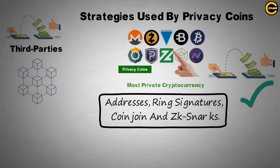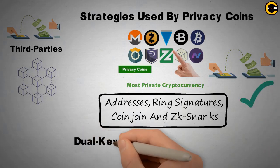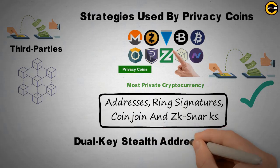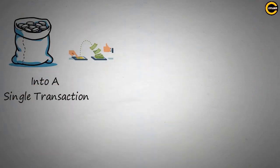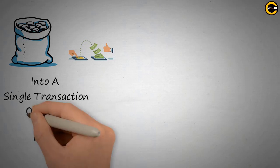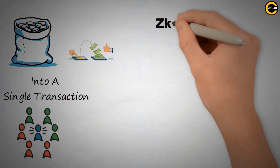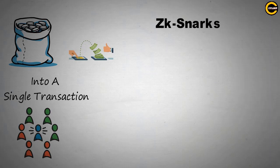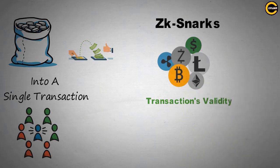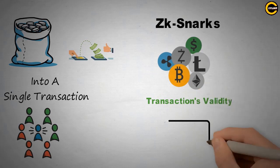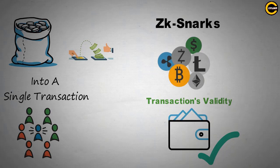Monero (XMR), one of the top privacy coins, uses a version of stealth address called the dual-key stealth address protocol (DKSAP). Coin join is known as a coin mixer that merges transactions from various individuals into a single transaction and then disperses them to their respective users using new addresses. Zk-snarks, or zero-knowledge succinct non-interactive argument of knowledge, allow cryptocurrency holders to prove a transaction's validity without divulging critical identifying information such as the parties involved and the account balances.